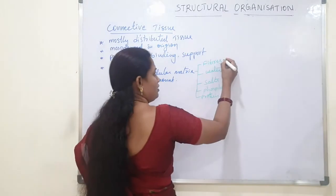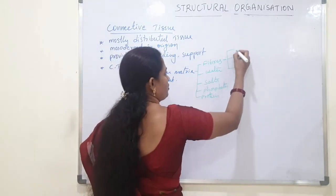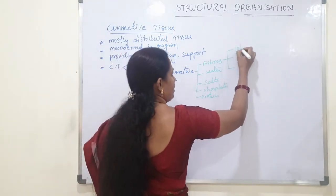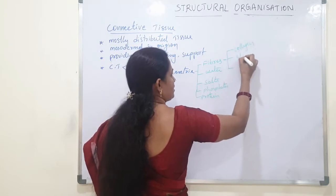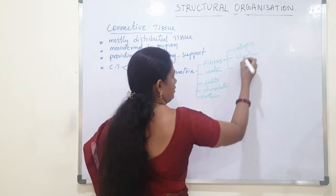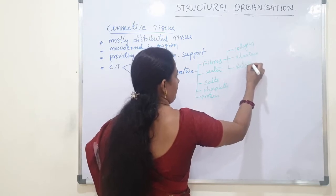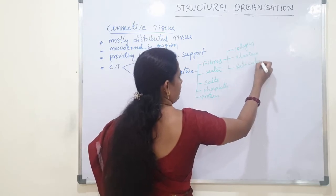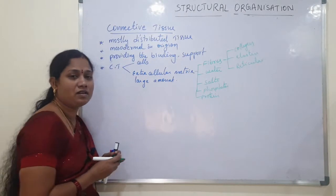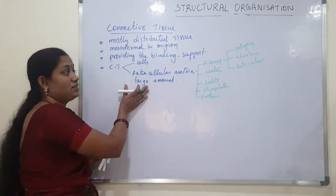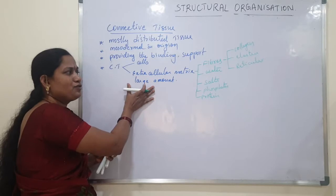Coming to fibers, three types of fibers are present in the matrix: collagen fibers, elastin fibers, and reticular fibers. A large amount of extracellular matrix and fibers are present in the connective tissue.